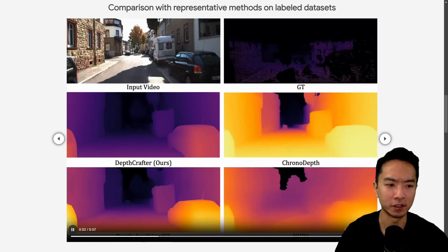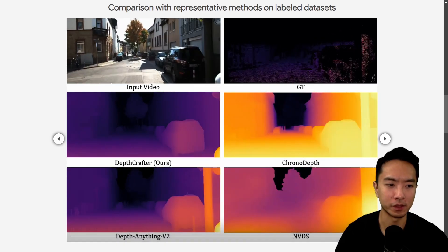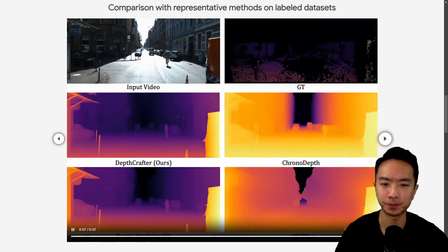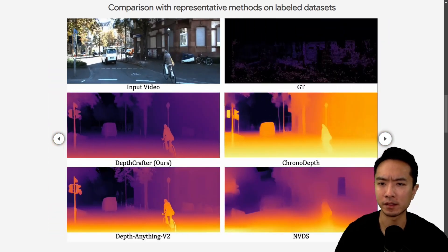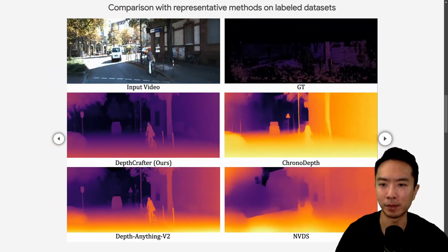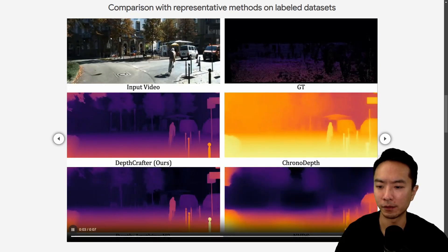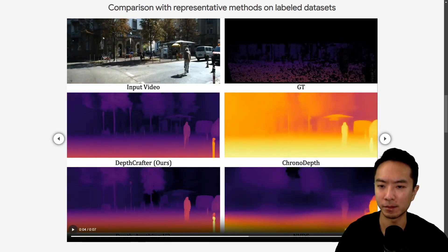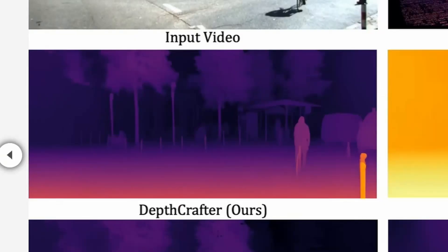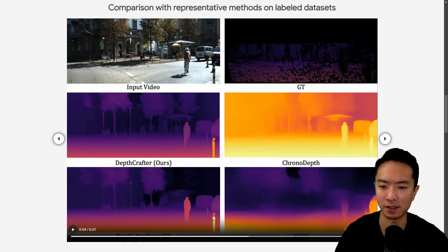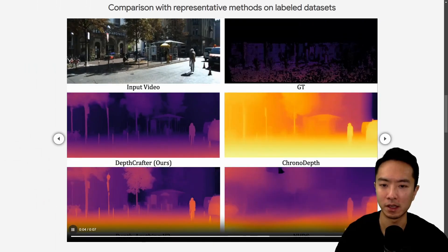Now let's take a look at this next one. This is a scene of someone biking around. If I pause at some areas, you can see that there are some more fine details definitely in the structure in the back. That's pretty good.